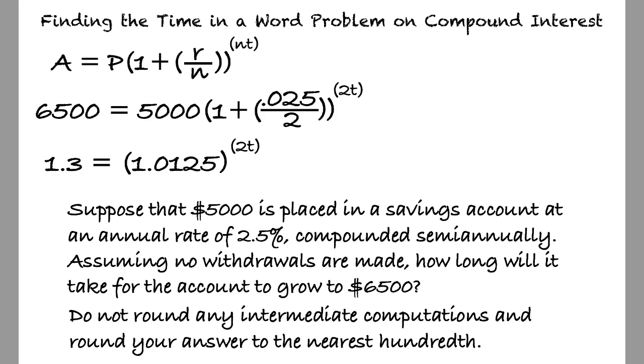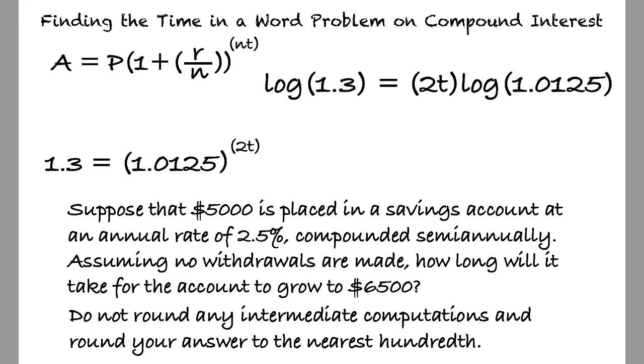Since t is in the exponent, we can take the common logarithm of both sides of the equation to yield log of 1.3 equals 2t multiplied by the log of 1.0125.